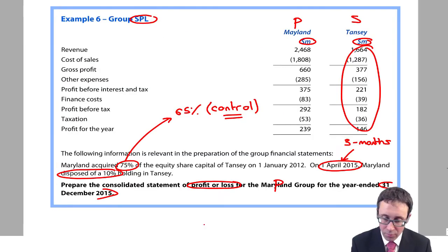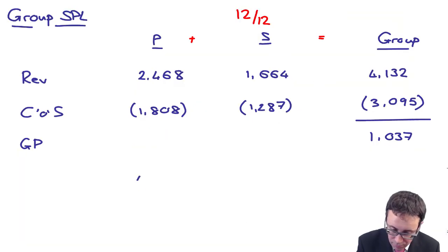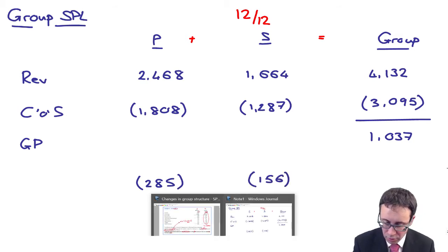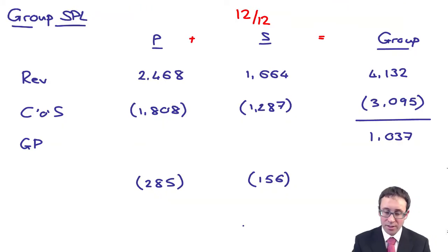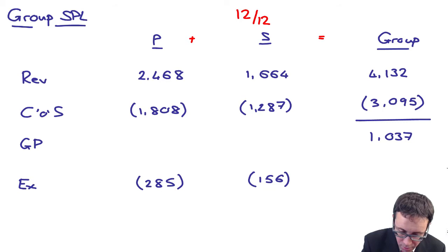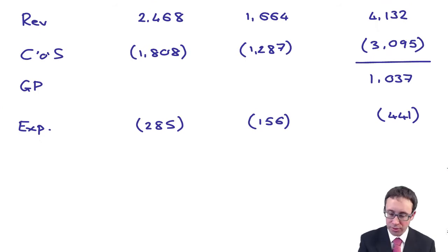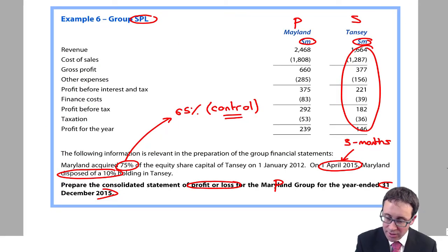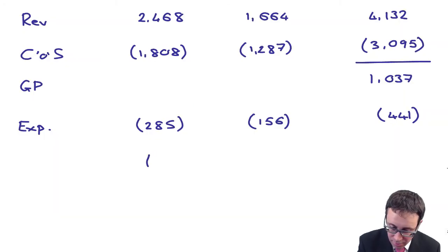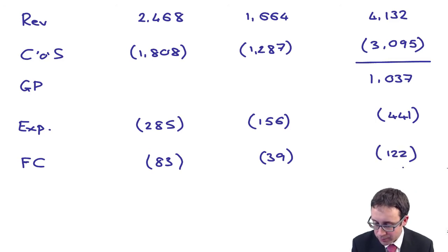My next line item was my other expenses. 285 and 156. Where are my other expenses? 285, 156. Does that give me 441? Again, no adjustments. I'm keeping it nice and simple. I've then got my finance costs of 83 and 39. That's my finance costs, 122. Gives me PBT of 474.